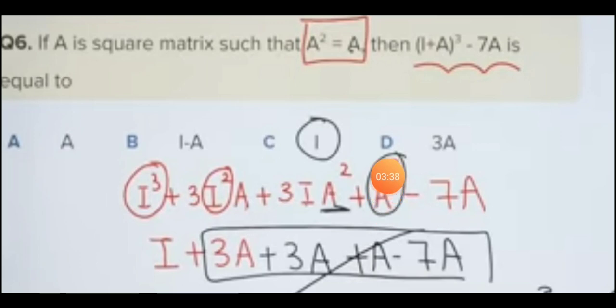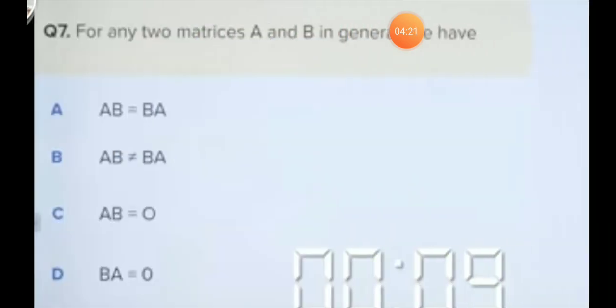Using the property that I squared equals I and A squared equals A, we find A cubed equals A. Expanding (I plus A) cubed minus 7A gives I plus 3A plus 3A plus A minus 7A. Since A squared equals A, we get 5A, which equals 5A. Therefore, answer I is correct. Remember this approach.